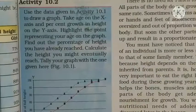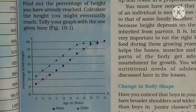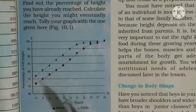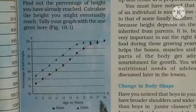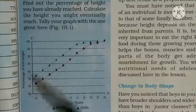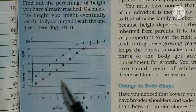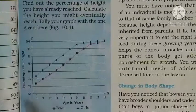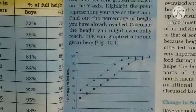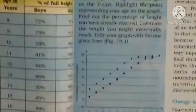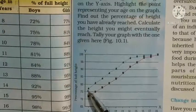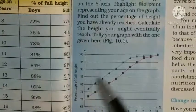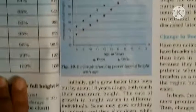Exercise 10.2 में, table में given data का graph बनाया गया है। Graph बनाना class 7th में सीखा है, तो यह easy है। X-axis पर age और Y-axis पर percentage रखा गया है। Dark points boys की height का percent हैं और lighter points girls के। 8 years के boys का 72% और girls का 77% — graph में भी यही दिखता है।